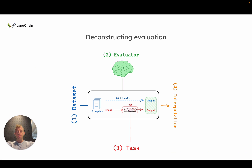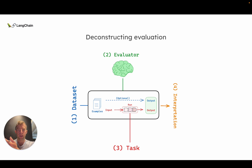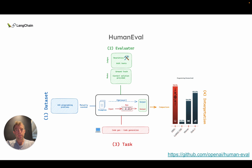A nice way to think about evaluation is just four pieces: there's a dataset, there's some kind of evaluator, there's a task, and there's some means of interpreting the results. Let's make this concrete and look at the various evaluations that have been run on some of these public models.